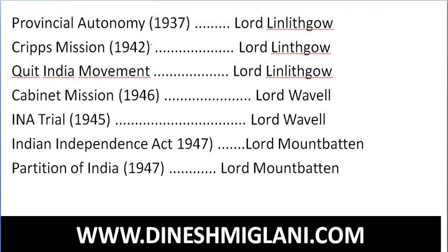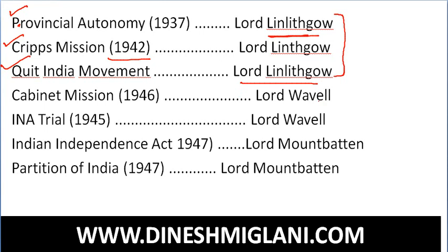Provincial autonomy in 1937 was at the time of Lord Linlithgow. The Cripps Mission in India came in 1942, and the Quit India Movement also occurred under Lord Linlithgow. Then we have Lord Wavell, who was Viceroy up to 1946. The Cabinet Mission and the INA — Indian National Army — trial were events during the time period of Lord Wavell.